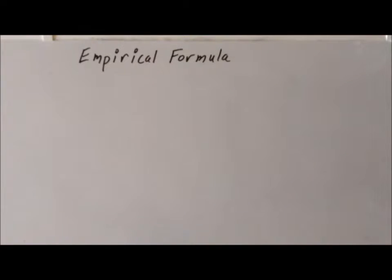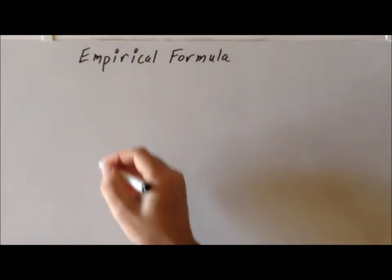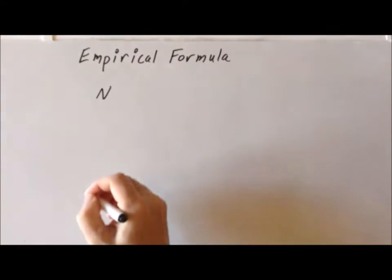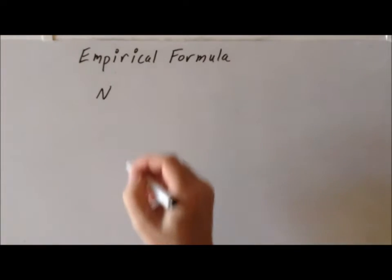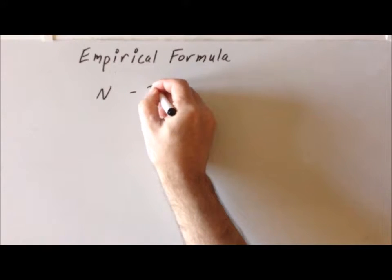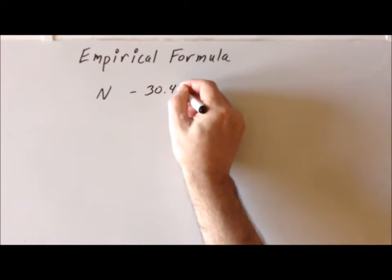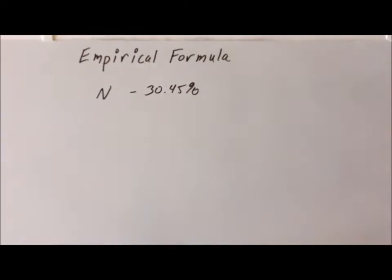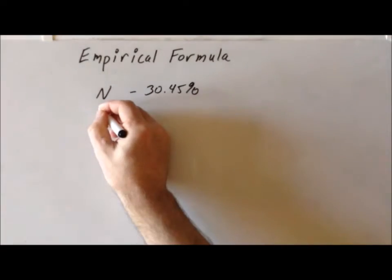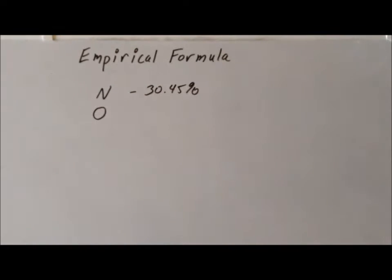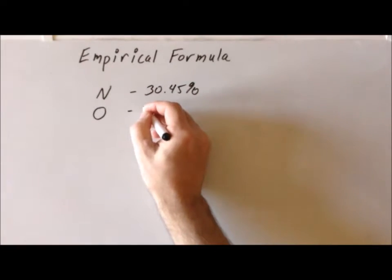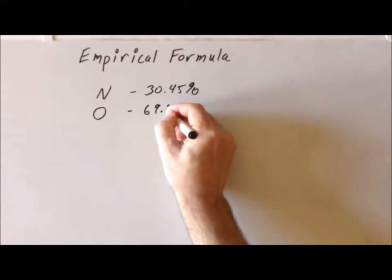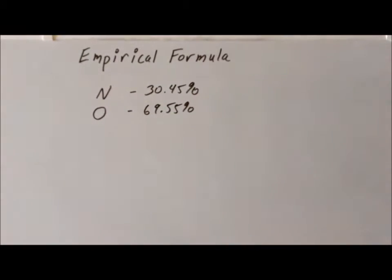So we start off with a certain piece of information. We know that we have a compound that has two and only two elements in it. One of them is nitrogen. And it turns out that this particular compound is 30.45% nitrogen. And we also know that this particular compound has one other element, which is oxygen. And the oxygen contributes 69.55% of the mass of the compound. When we're talking about these percentages, we always mean the percentage mass.